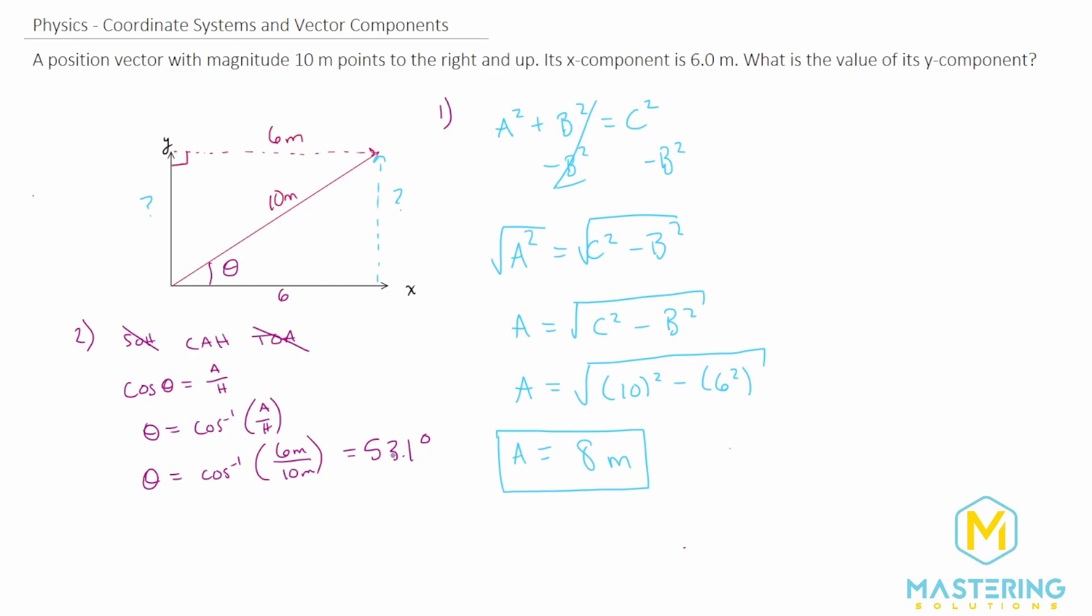And now that we know the angle now we can use one of these other two trigonometry functions to find the opposite. I'm going to use sine. So sine stands for sine of theta is equal to opposite over hypotenuse. We want to isolate opposite so we'll multiply both sides of the equation by the hypotenuse. So now we have opposite is equal to H sine theta.